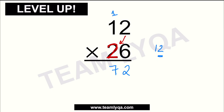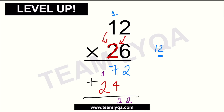Then we have 1 times 2, which gives us 2. Since there are no more digits, we now add the two rows together. Going from right to left: 2 stays; 7 plus 4 is 11, so write 1 and carry 1; 1 plus 2 is 3. So the answer is 312.